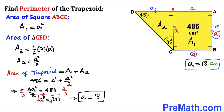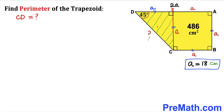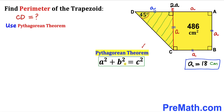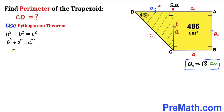Now let's calculate side length CD. Since triangle CED is a right triangle, we use the Pythagorean theorem: A squared plus B squared equals C squared, where C is the hypotenuse. In our case both legs equal a, so a squared plus a squared equals C squared, which gives C squared equals 2a squared. Taking the square root of both sides, C equals a times the square root of 2. So side CD equals a√2.